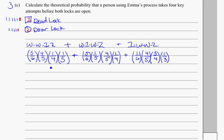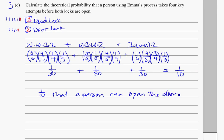And when you multiply all these out and add them up, you've got one out of thirty, plus one out of thirty, plus one out of thirty. That adds up to one tenth. So, one out of ten that a person can open the door in exactly four attempts.